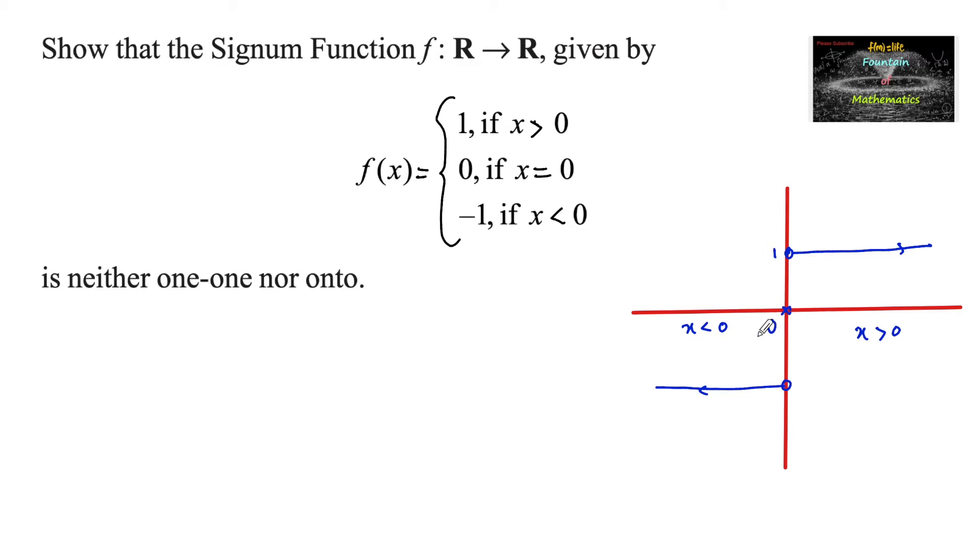Since the function domain is real numbers and codomain is real numbers, but domain of signum function is all real numbers and the range of signum function is minus 1, 0, and plus 1, clearly we can say it is neither one-one nor onto.